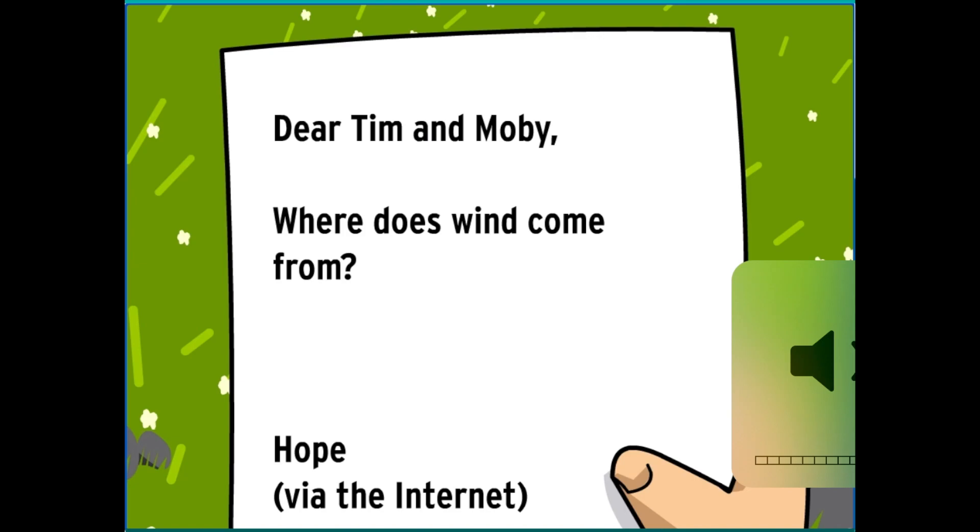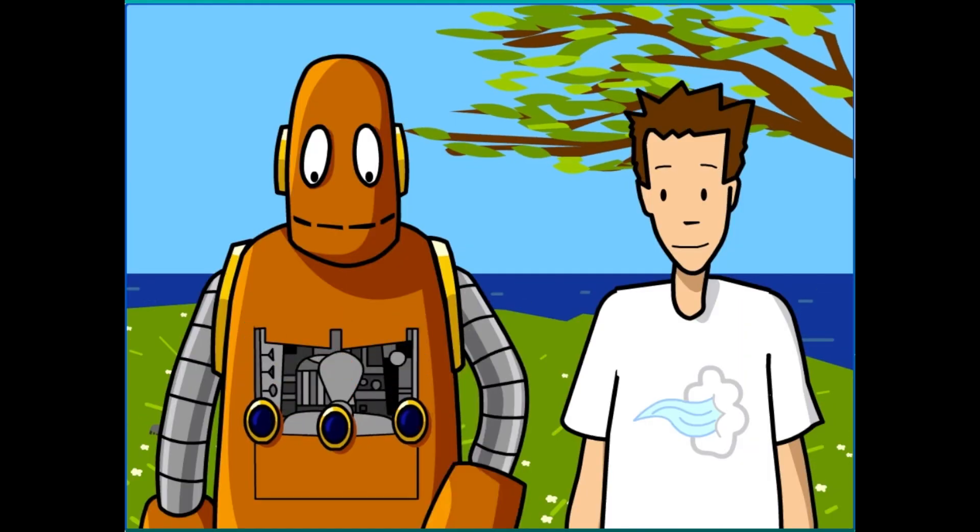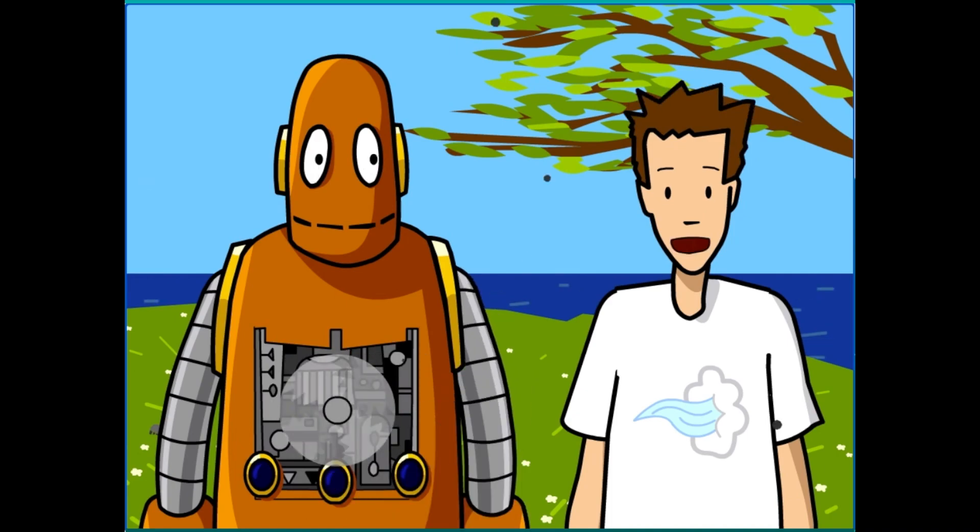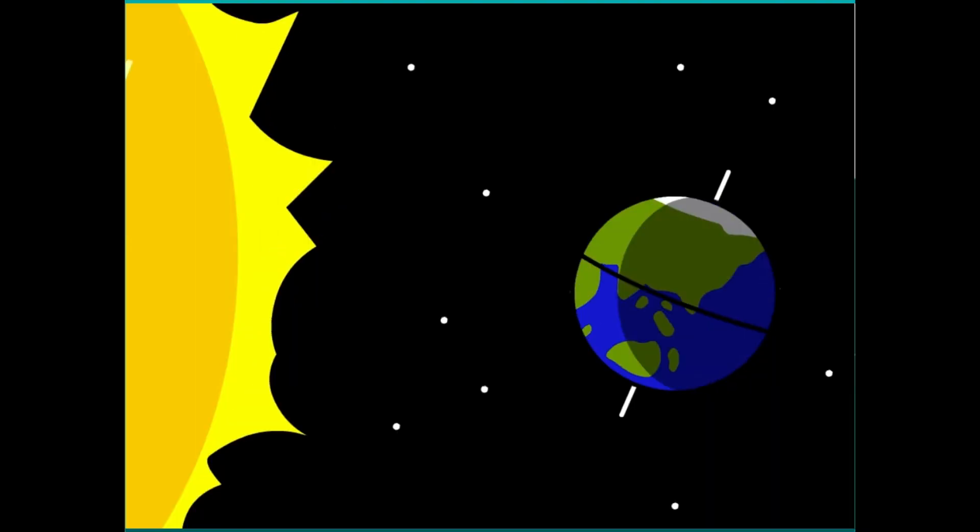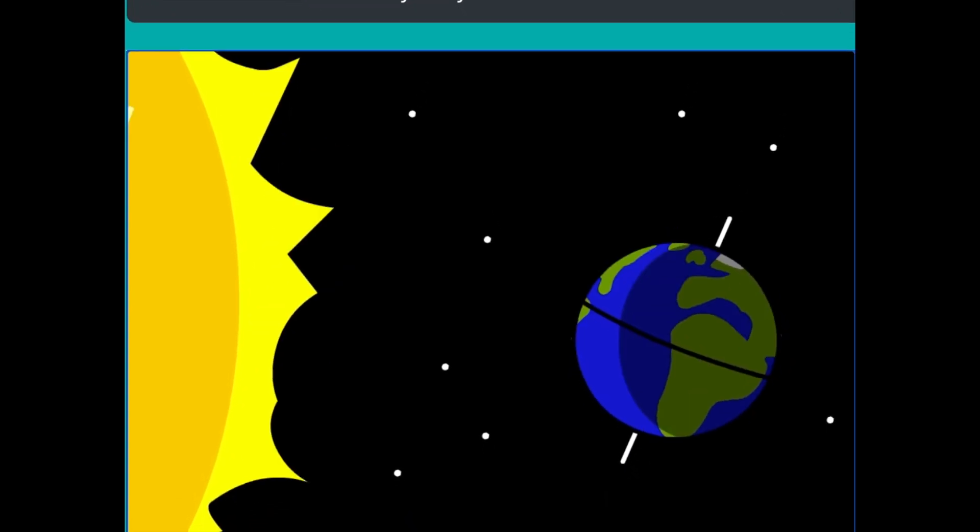Dear Tim and Moby, where does wind come from? From Hope. Well, that's one way to move air, and that's just what wind is, moving air. But there's no giant propeller pushing wind around the earth. Believe it or not, the wind is caused by the sun.